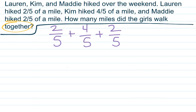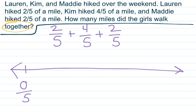The best way to show this is to show it on a lovely number line. So let's start with zero, and we know that we are adding fifths, so let's label all the way until one. Now, I don't want to go all the way to the end of my number line, just in case Lauren, Kim, and Maddie hiked over one mile. So I have zero-fifths, one-fifths, two-fifths, three-fifths, four-fifths, five-fifths. We know that that's also one.